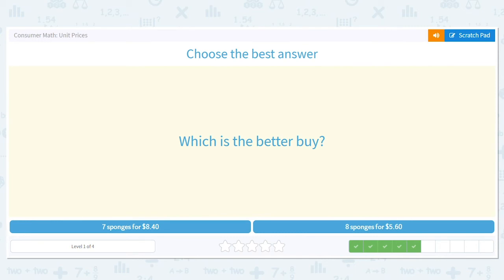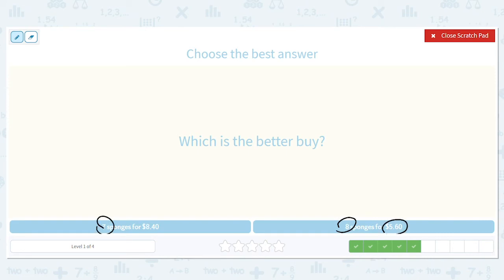What is the better buy? 7 sponges, okay, again more sponge, less money. More sponge, sorry less sponge, more money. So this is bad. Now it would be harder to tell if it were like more sponges and more money, and then you'd have to actually do the math. But here you don't have to do the math. You're getting 8 sponges, which is more than 7, for less money.